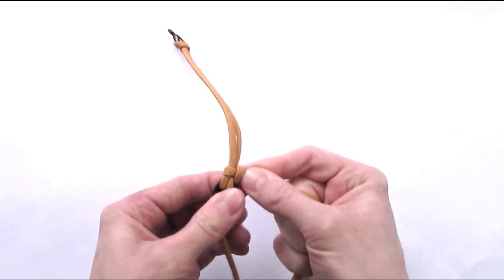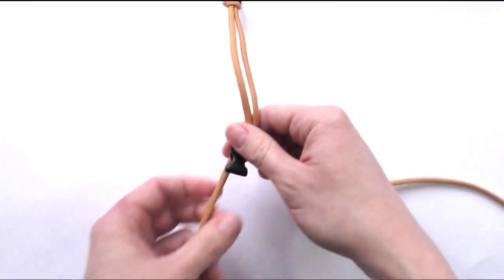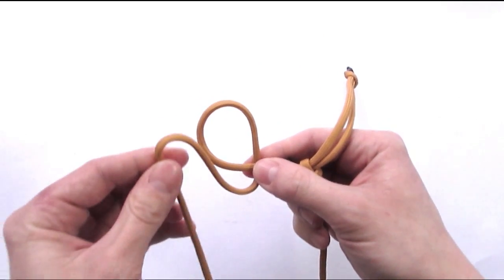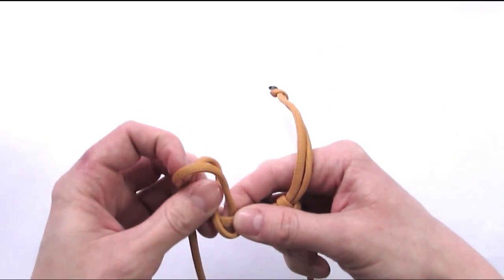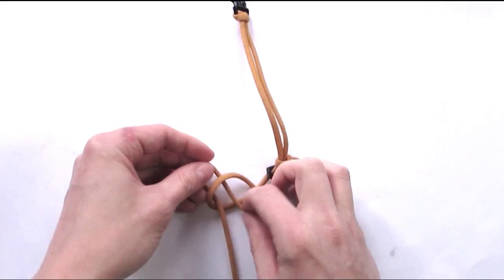We are now going to do a slipknot to the left side, which is done exactly the same way. We make a loop, we then feed a bite through this loop, and then we tighten up this slipknot.